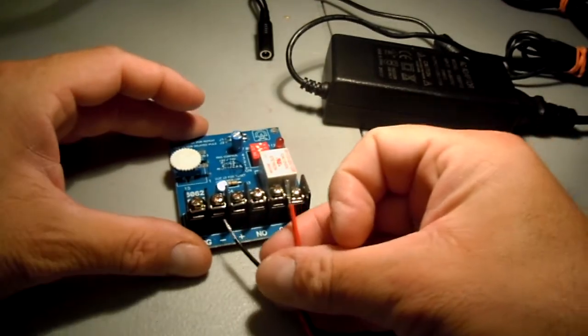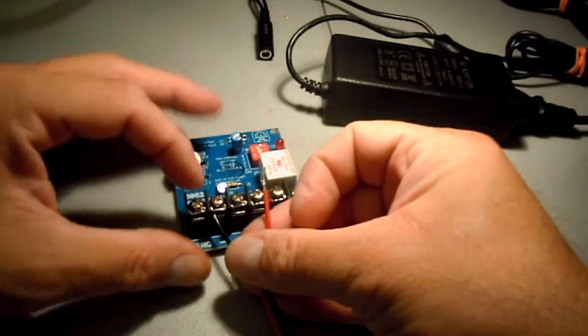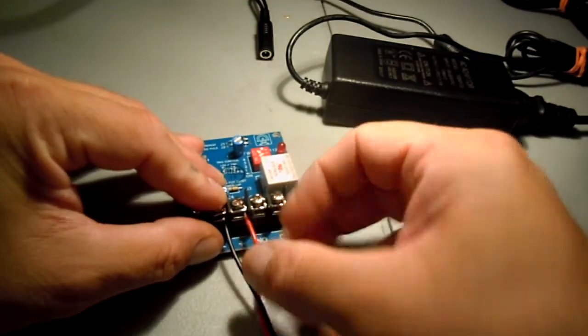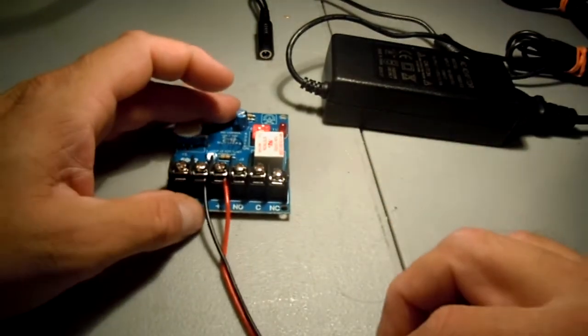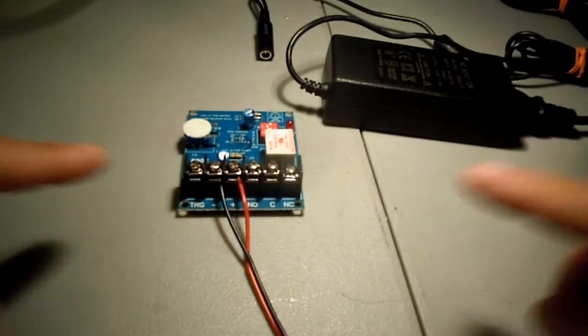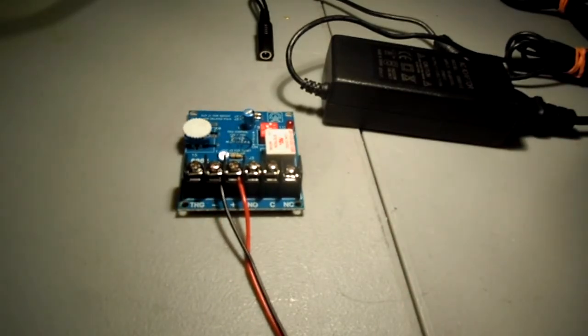For the power going in, obviously black is going to be the negative and red is going to be the positive. I'm not going to tighten it down just yet because there's more wires going in those slots.